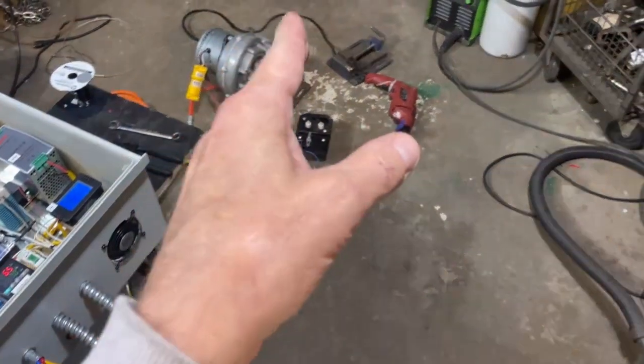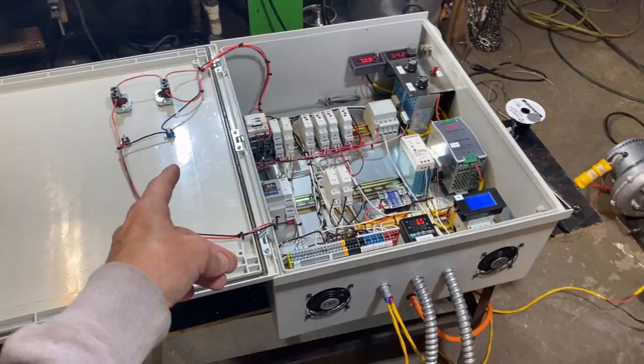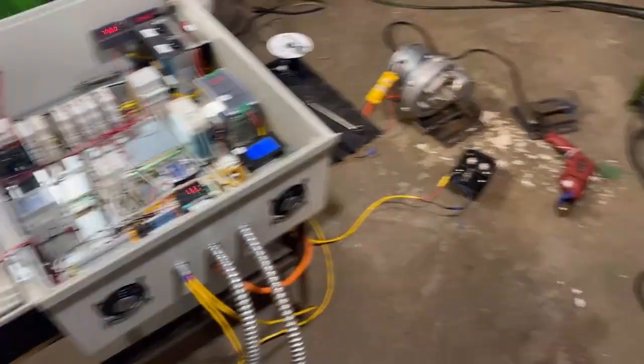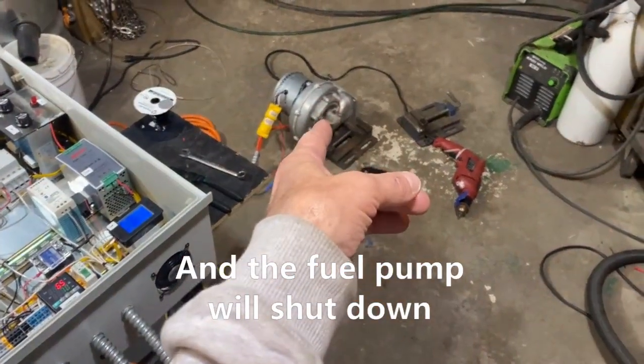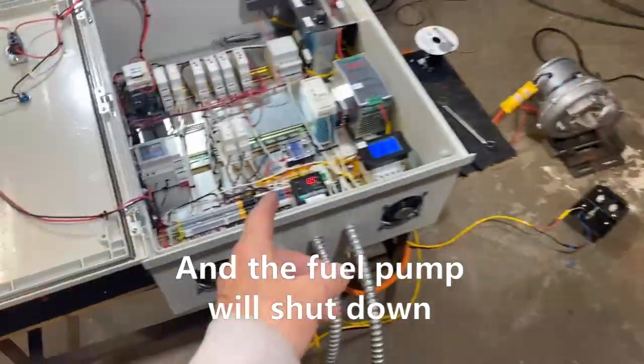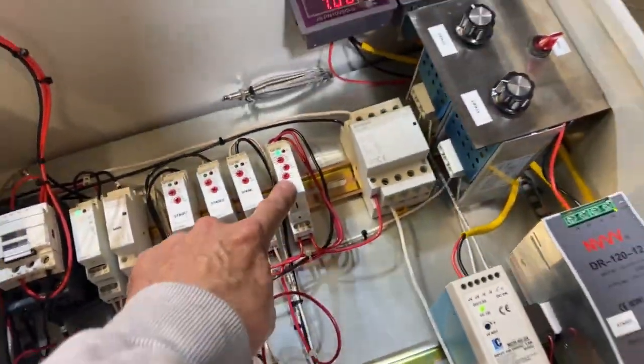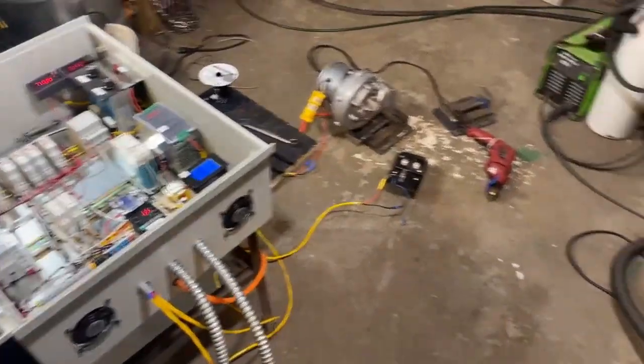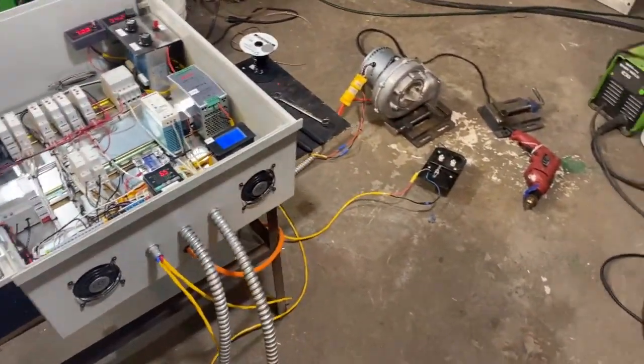We will then see the igniter go off. When the igniter goes off I'm going to hit the shutdown button at which point the blower will automatically remain on for the set period of time. Reminds me I need to label this. So here we go. We're hitting the switch.